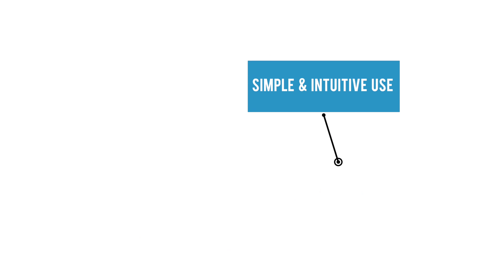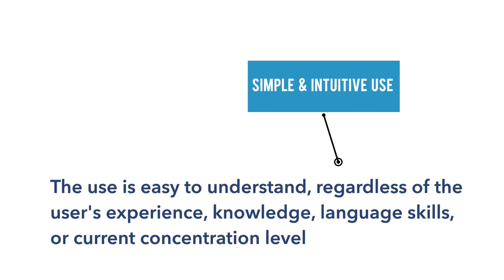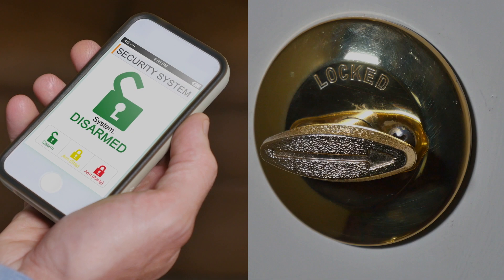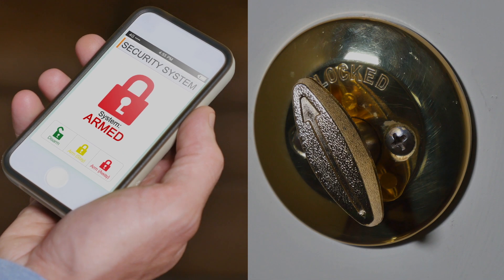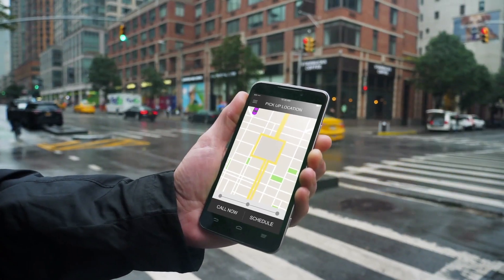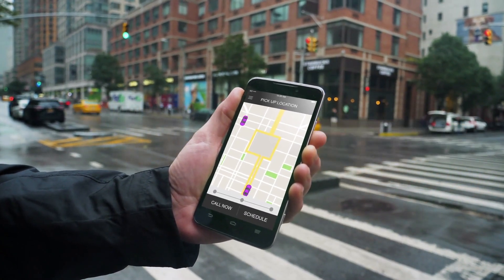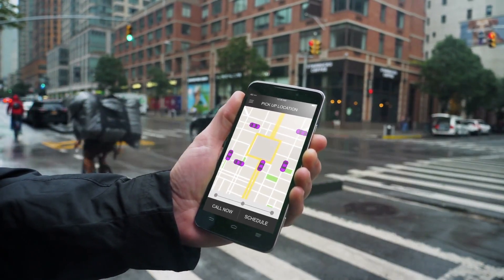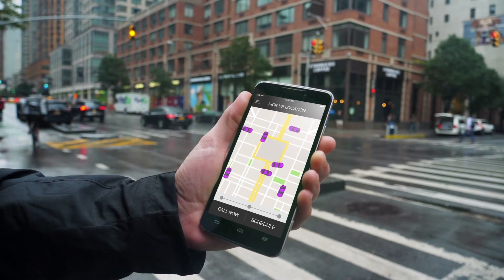The third universal design principle is simple and intuitive use. A design meets this principle when its use is easy to understand, regardless of the user's experience, knowledge, language skills, or current concentration level. Picture icons on a smartphone or tablet are examples of simple and intuitive use, as these help users who speak different languages or have varying communication skills utilize a design the same way without a list of complicated instructions.